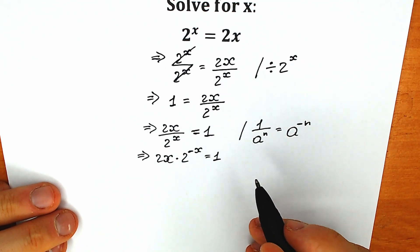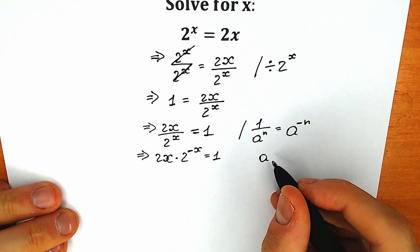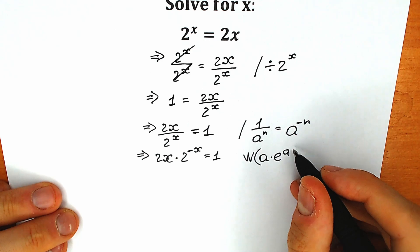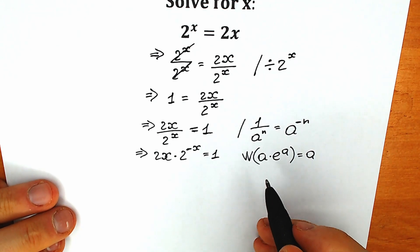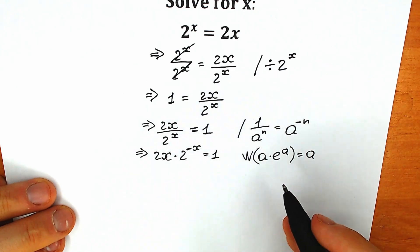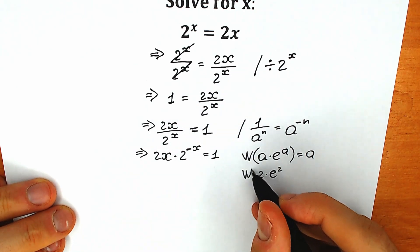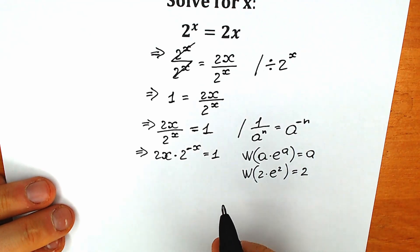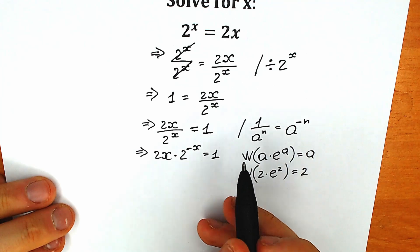The next step: we need to know about the Lambert W function. This function works like this — when we have an expression of the form a times e to the power a, and we apply the Lambert W function to it, as a result we get only a. So the main idea is that we need to create this type of structure on our left side — something like a times e to the power a.